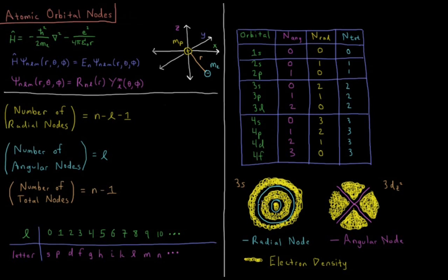I have this example kind of crudely drawn out here. In terms of the 3S, there's our two radial nodes in the 3S function. 3DZ squared is 3D, so it has two angular nodes but it doesn't have any radial nodes.